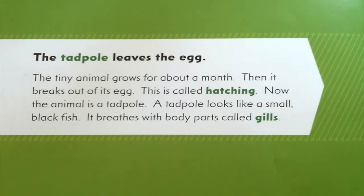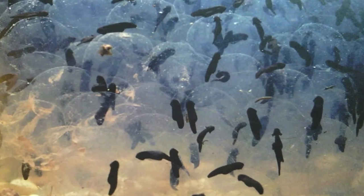Here's our next heading — I see some of our vocabulary words, and they are in green but also bold print. In an informational text, sometimes it tells us what the keywords and vocabulary are so that we know we need to figure out what they mean. This is where our glossary will come in. The heading is: the tadpole leaves the egg. The tiny animal grows for about a month, then it breaks out of its egg — this is called hatching. Now the animal is a tadpole. A tadpole looks like a small black fish. It breathes with body parts called gills.